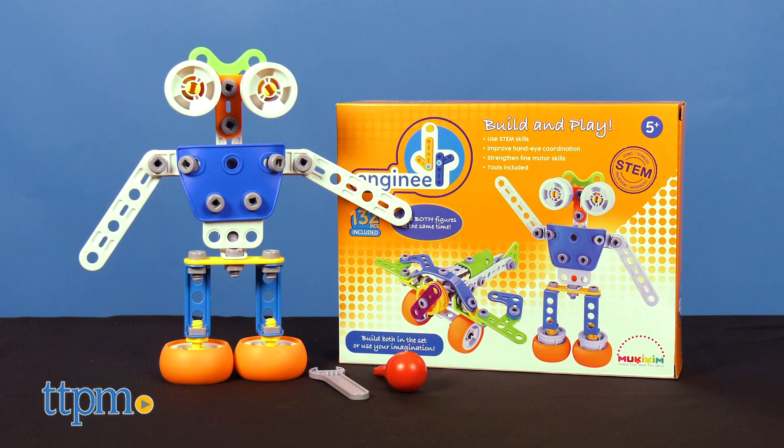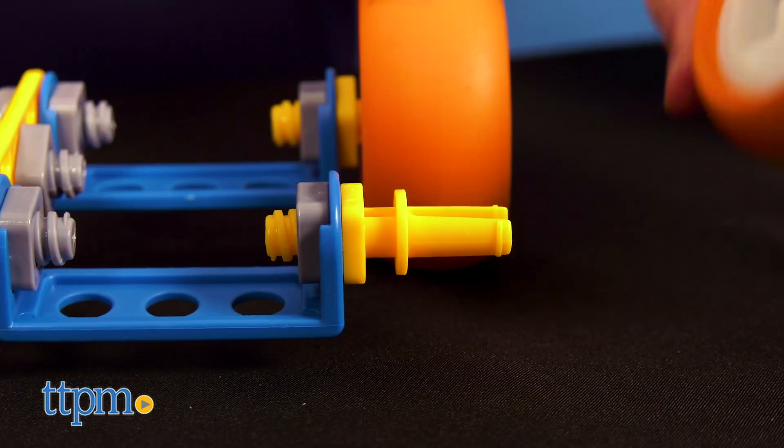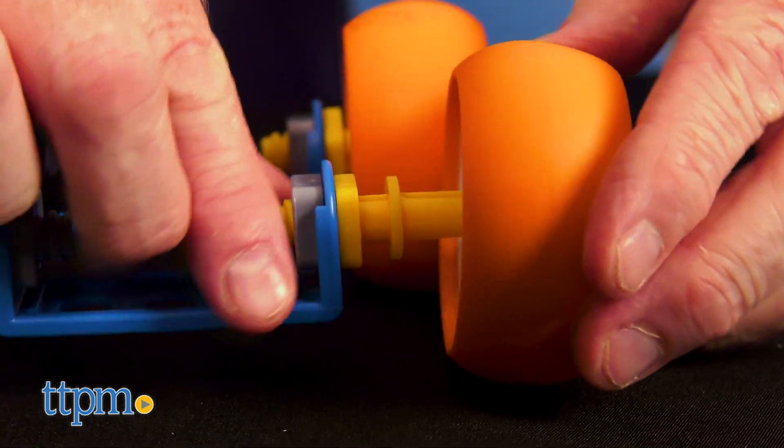The Engineer Junior Build and Play from Mukikim allows kids to construct two different pieces with the help of some instructions and tools.